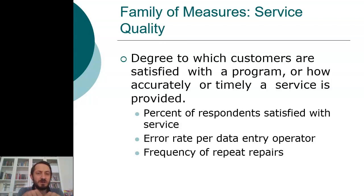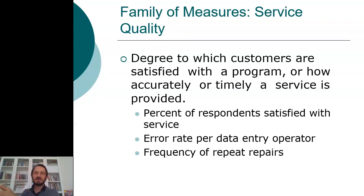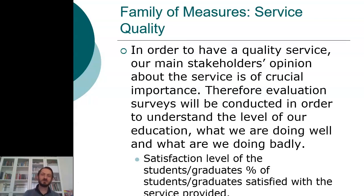So we should divide quality into two. The first part is related to subjective opinions of the respondents. The second part is related to the objective measurement of mistakes made. For a university, for example, this would be the satisfaction level of students related to a course.